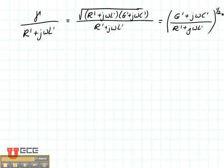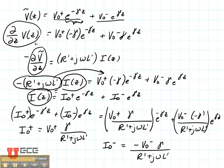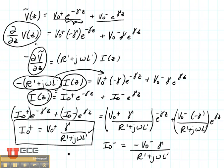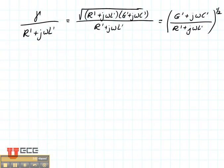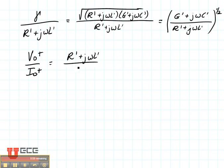So now let's go back and look at our equation. This term is the term that we just derived, and what I'm interested in is actually V0 plus divided by I0 plus — so it's going to be the inverse of that term. So V0 plus divided by I0 plus is going to be the square root of R' plus j omega L' over G' plus j omega C'.